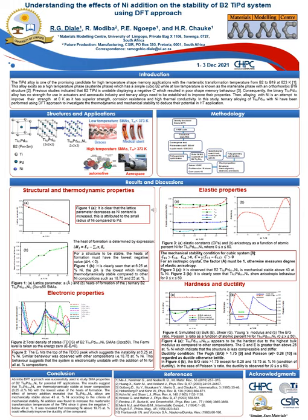We used a supercell to substitute palladium with nickel. Afterwards we did geometry optimization. The elastic properties were calculated as a function of composition. Based on the results and discussion, we checked the structural properties by looking into lattice parameters. We found that the lattice parameters increased with an increase in nickel composition. This is attributed to the fact that nickel has a smaller atomic radius compared to palladium.